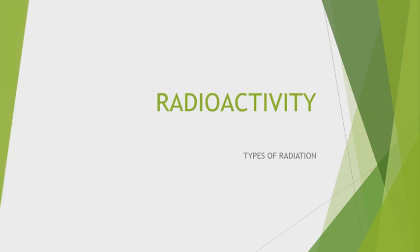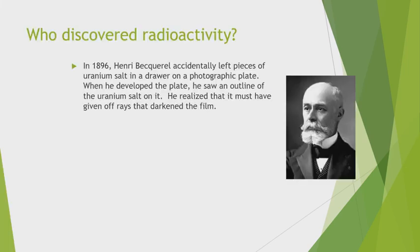Next topic: Radioactivity and types of radiation. Who discovered radioactivity? In 1896, Henri Becquerel accidentally left a piece of uranium salt in a drawer on a photographic plate. When he developed the plate, he saw an outline of the uranium salt on it. He realized it must have given off rays that darkened the film. So the founder of radioactivity is Henri Becquerel.